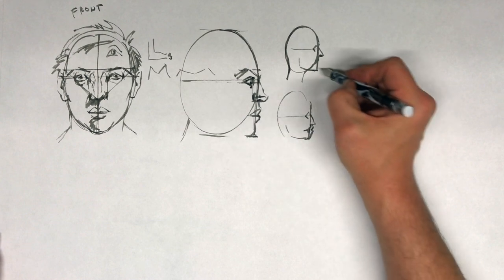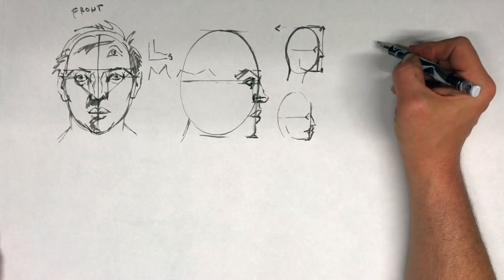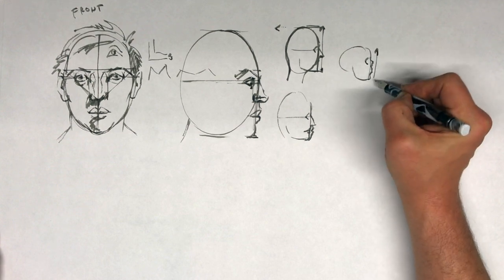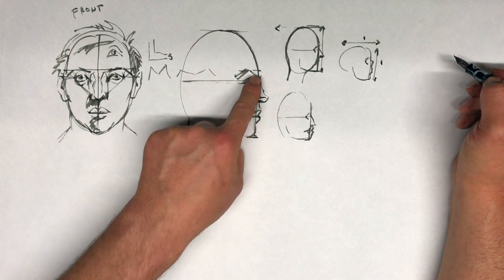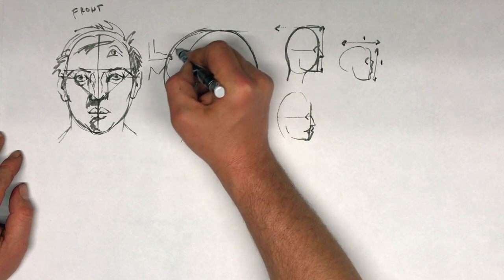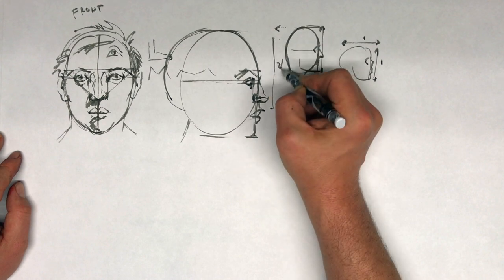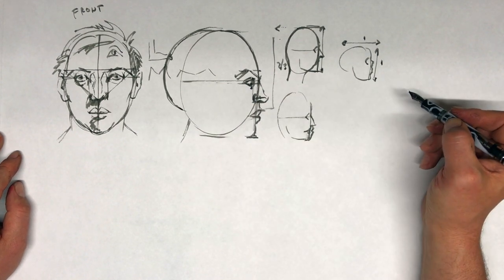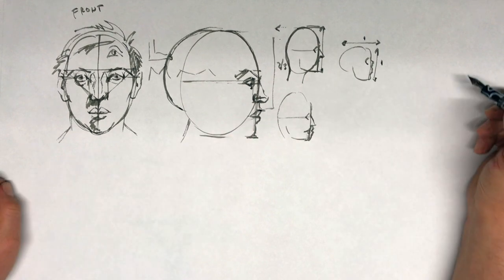Usually when you draw a head from the side, whatever distance you have up and down, you're going to have the same distance back here. The skull has a proportion that is one and one — so the distance from here to here is the same as the distance from here to here. We're going to add a little bit of cranium — an additional curve that ends right here. This is about two-thirds the distance of our oval. Usually this part here, the occipital bone — the base of the skull — lines up at the two-thirds line, which is usually the top of the upper lip.